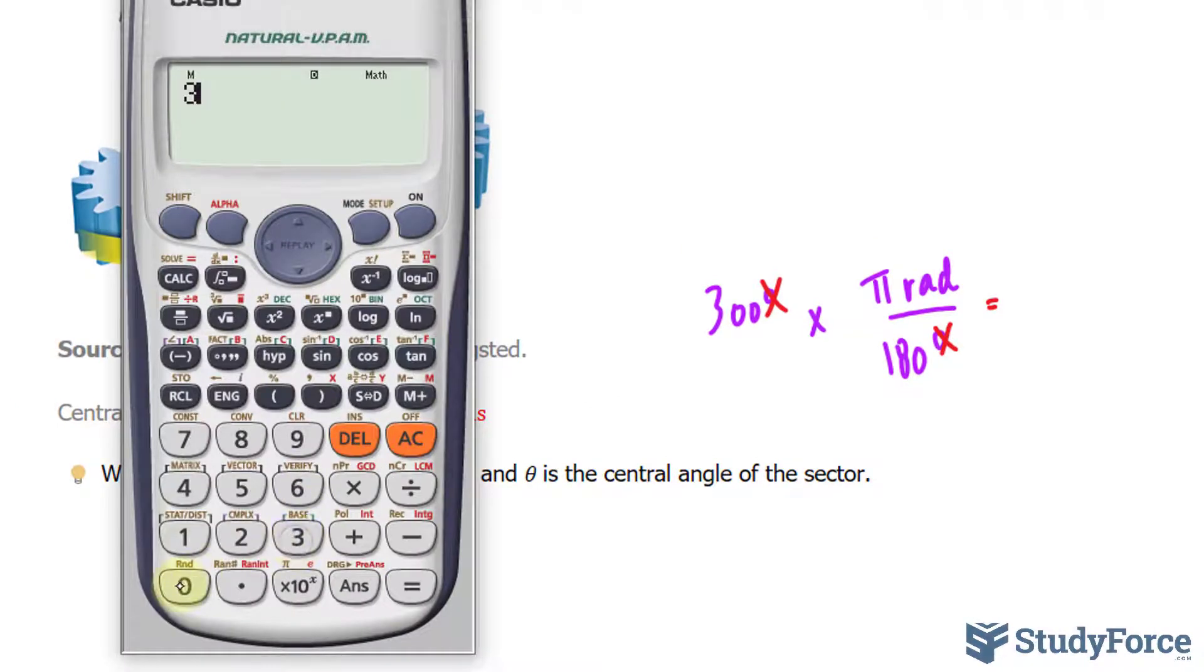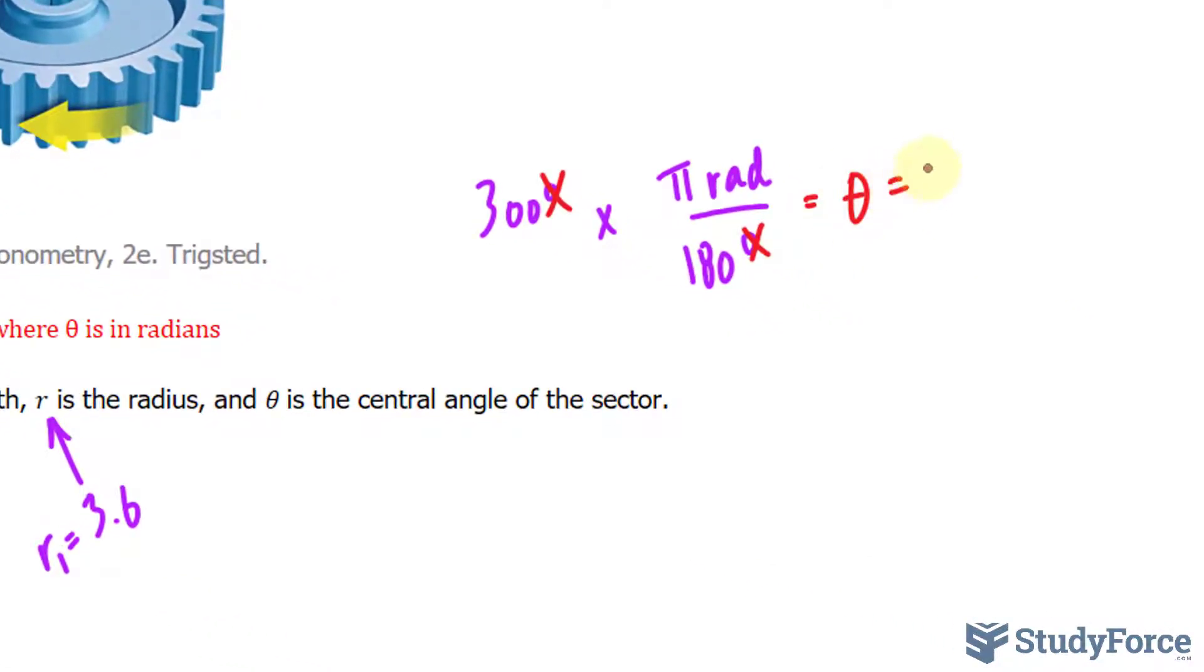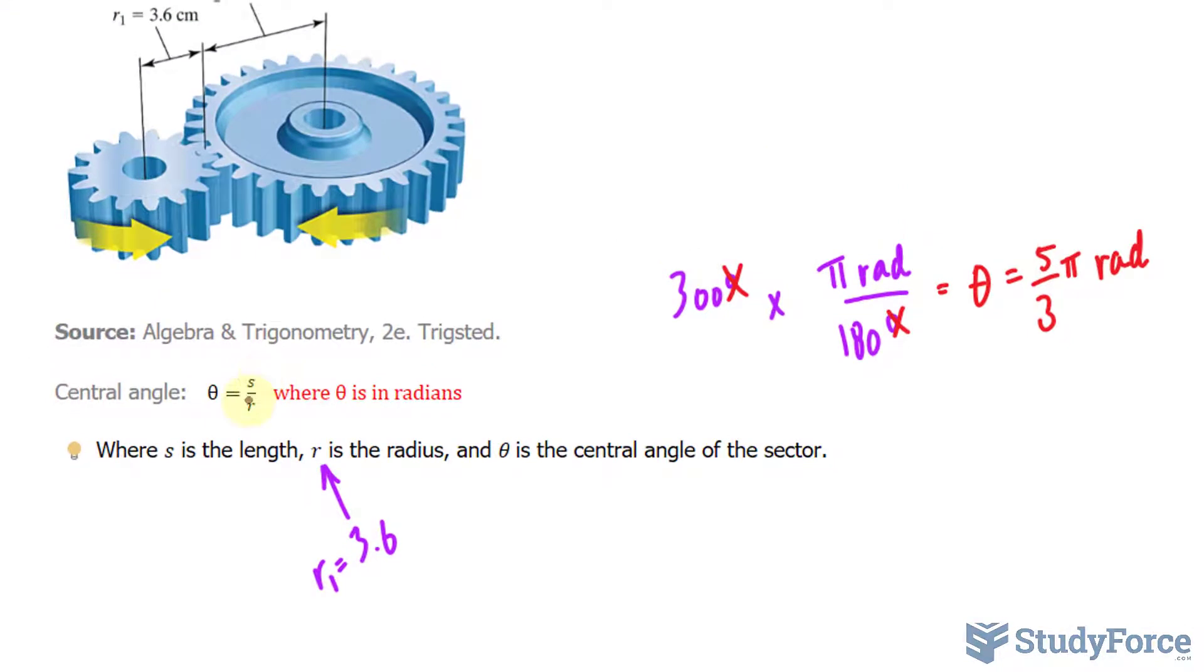Let's use our calculator really quickly. 300 divided by 180, that gives us 5 over 3 pi. So theta is equal to 5 over 3 pi radians. Using these two values, we can now find S, which is the length that is covered by this many degrees and at that radius.